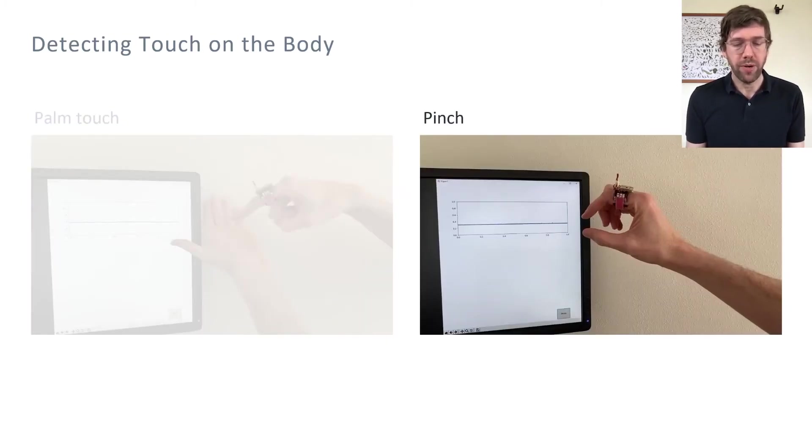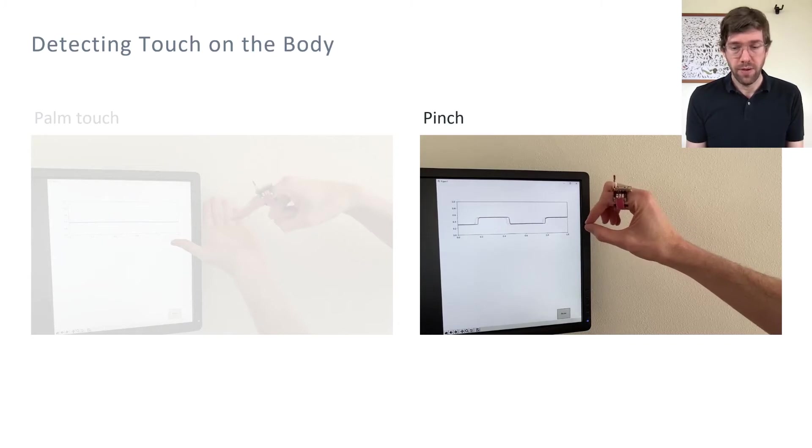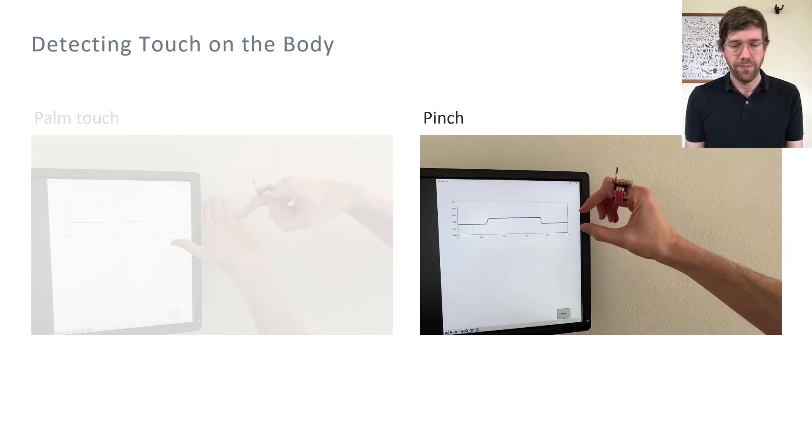This works on any part of the body, including the opposing thumb. In this video here, the user makes a pinch gesture with their thumb and index finger. And as in the previous example, touch states are clearly discernible in the raw sensor output.